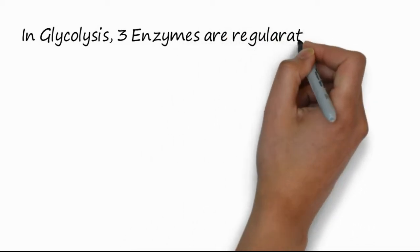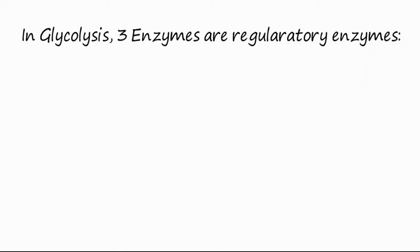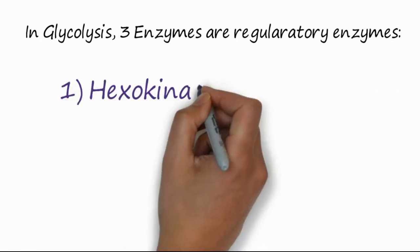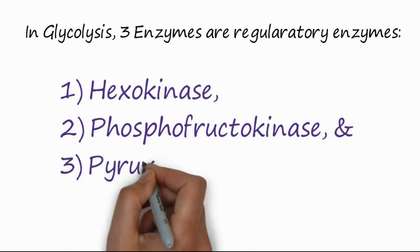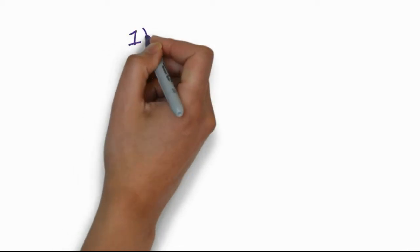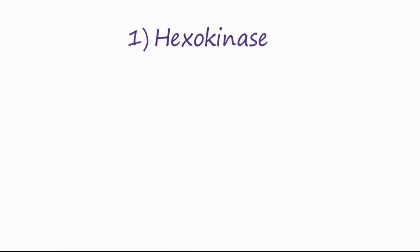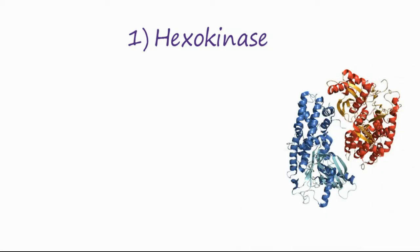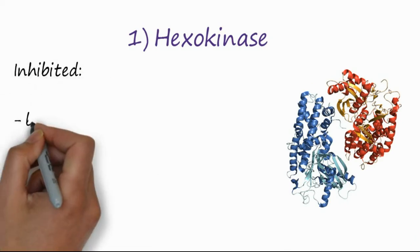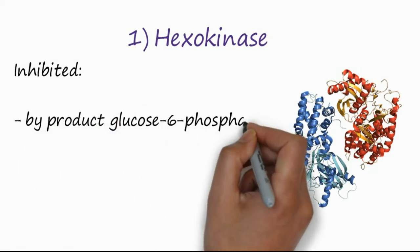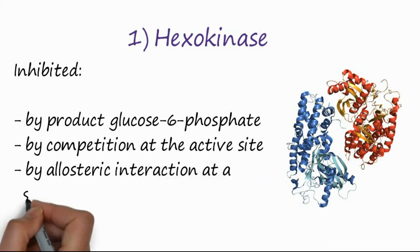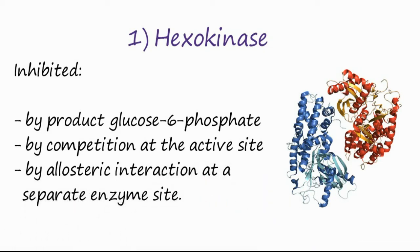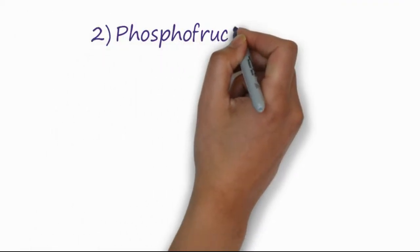In glycolysis we have three enzymes which are regulatory enzymes and they control the process of glycolysis. The first one is hexokinase. Hexokinase is the first enzyme which converts glucose or any hexose into hexose monophosphate. It is usually inhibited by the product glucose-6-phosphate, or inhibited by competition at the active site by allosteric inhibition at a separate allosteric site.